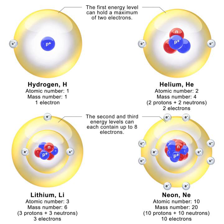Ultracold neutrons are produced by elastically scattering cold neutrons in substances with a temperature of a few kelvins, such as solid deuterium or superfluid helium. An alternative production method is the mechanical deceleration of cold neutrons.